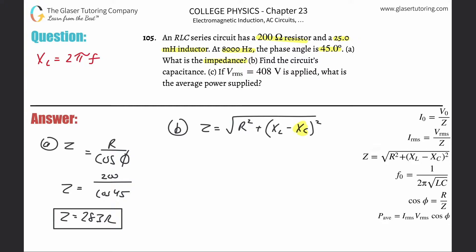The reactive inductance X_L equals 2π times the frequency multiplied by the inductance. The frequency is 8000 hertz and the inductance is 25 millihenry, which is 25 times 10 to the minus 3 henries. So X_L = 2π × 8000 × 25×10⁻³, which works out to about 1.26 × 10³ ohms.